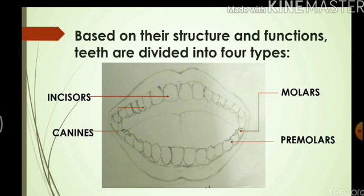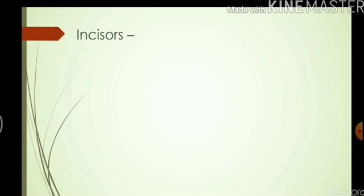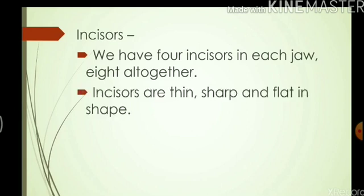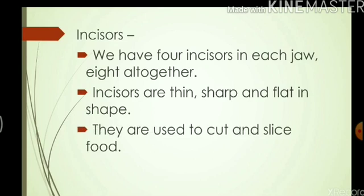Our mouth is made up of two sets of jaws. The upper one is called the upper jaw and the lower one is called the lower jaw. We have four incisors in each jaw — four on top, four down — so eight altogether. Incisors are thin, sharp, and flat in shape. They are used to cut and slice food. Because they are thin and flat, we can easily bite into food using incisors, and that is why they are placed right in the front of your mouth.